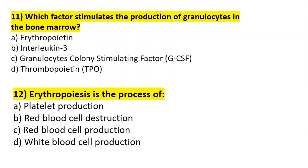Question eleven: the factor that induces the production of granulocytes in the bone marrow is called the granulocyte colony-stimulating factor, or GCSF. This is the factor that tells granulocytes to be produced in the bone marrow.